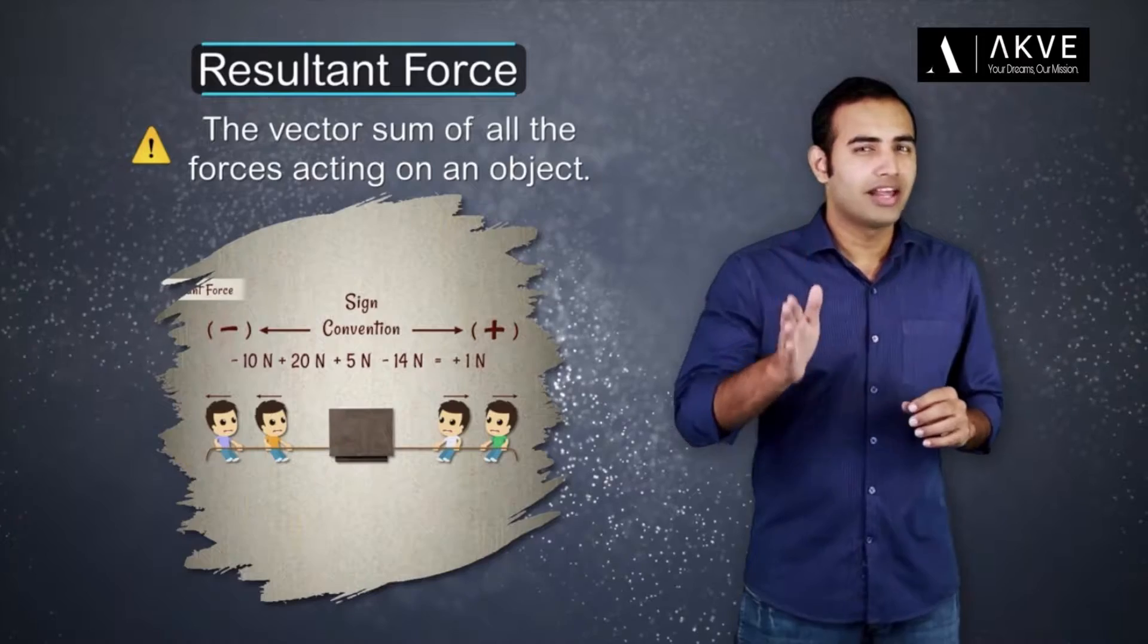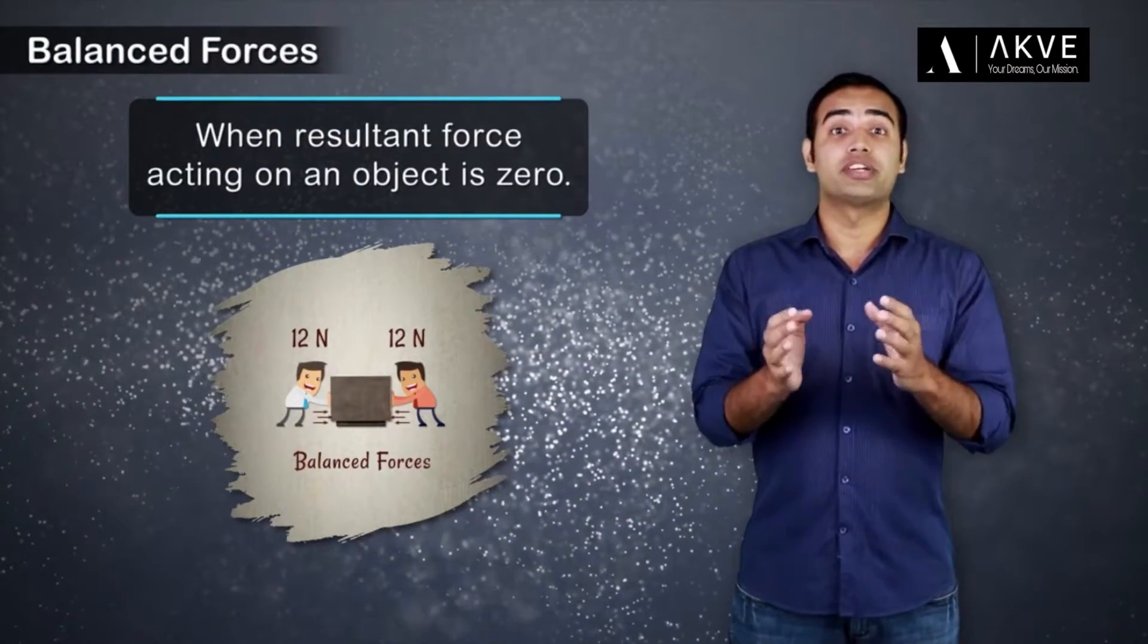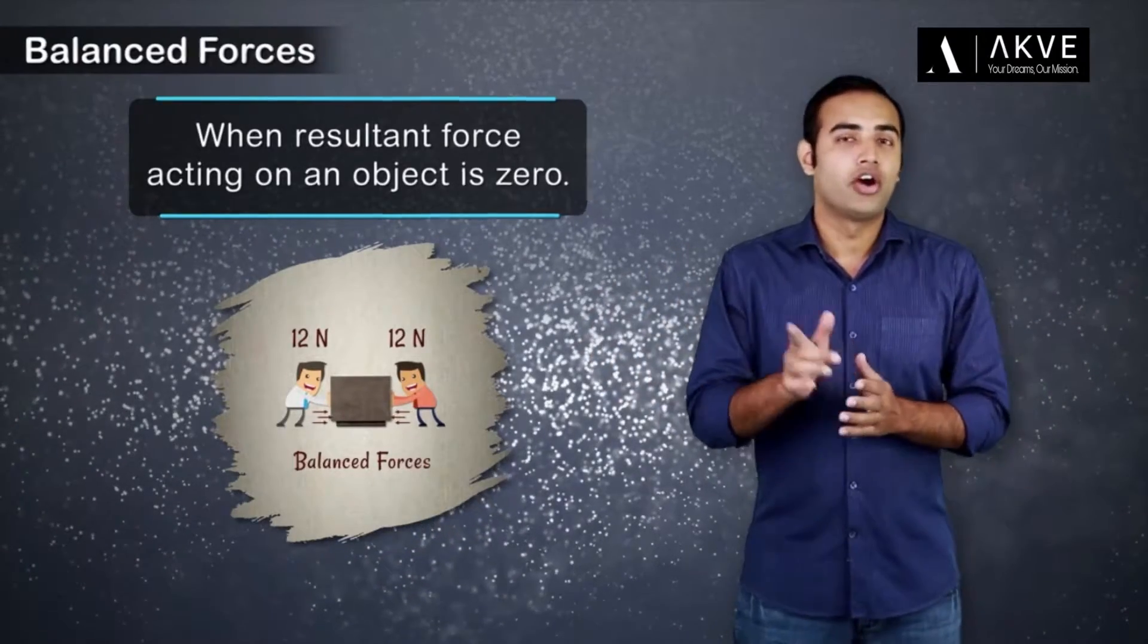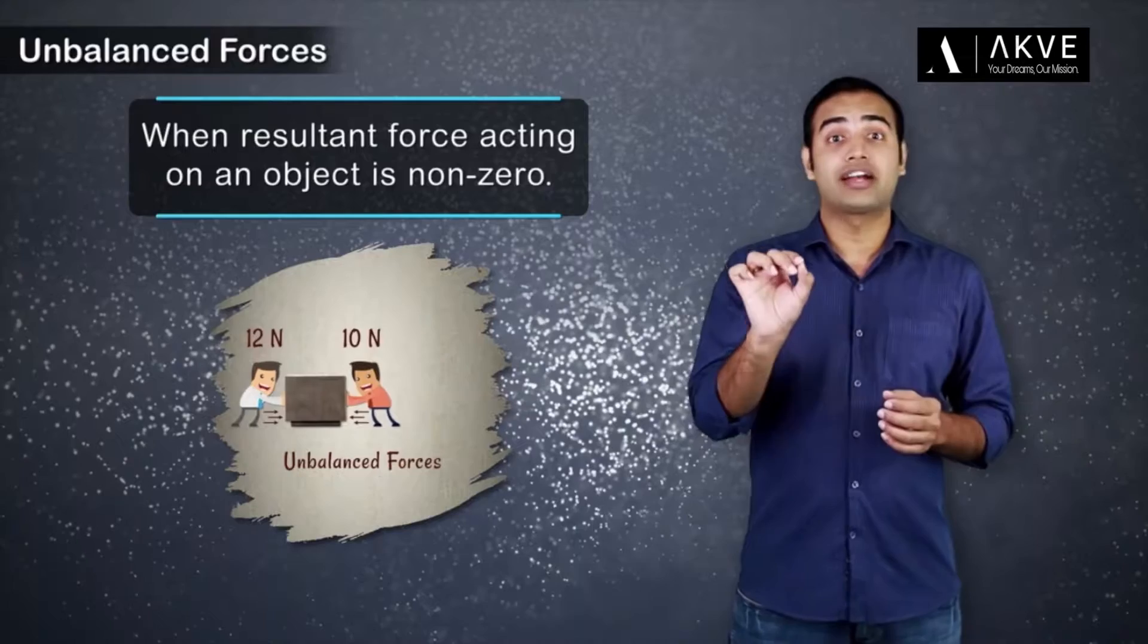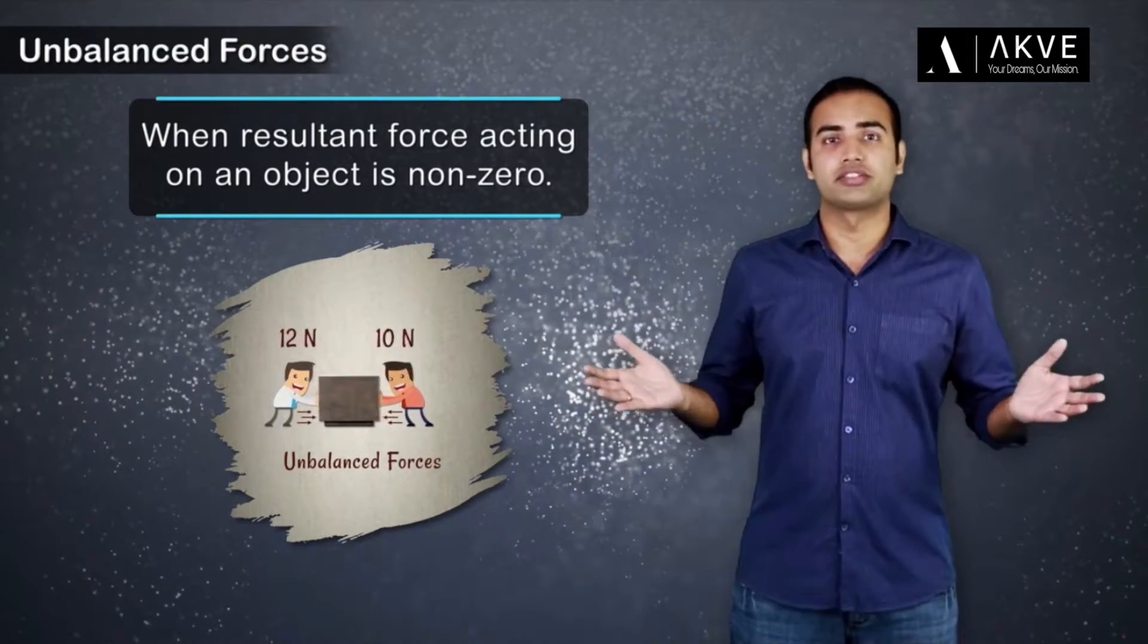Now apart from this, we also talked about balanced and unbalanced forces. When resultant force acting on an object is zero, we say that the forces are essentially balanced. On the other hand, when the resultant force acting on an object is non-zero, we say that the forces are unbalanced.